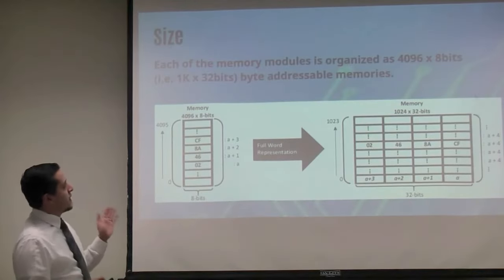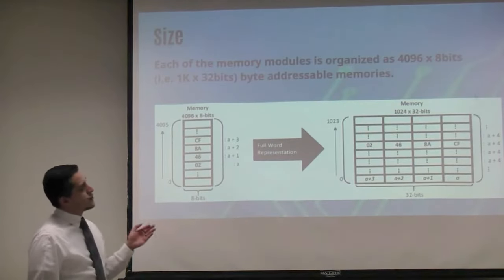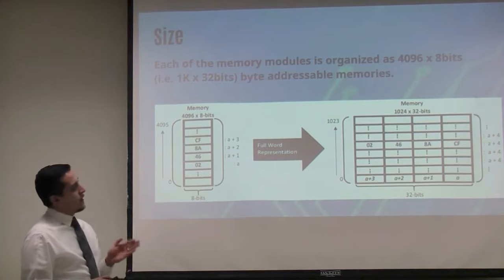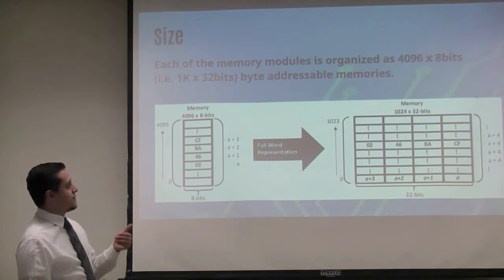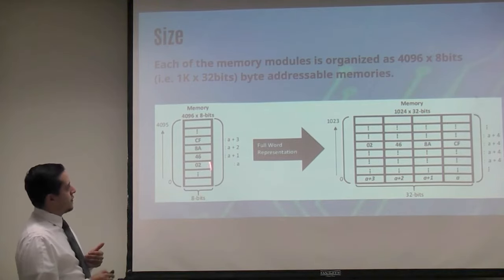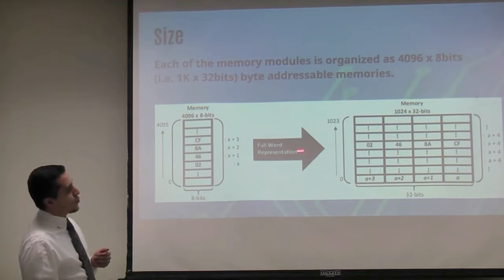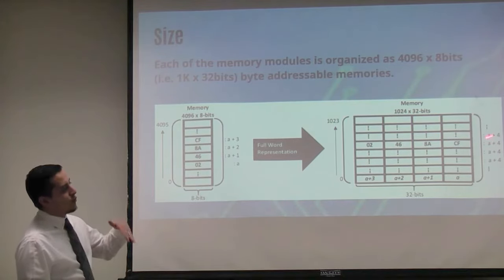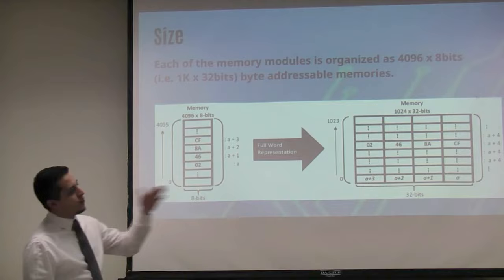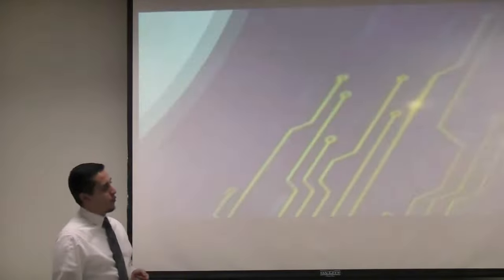Each memory is organized in a 4096 by 8 bits fashion. This is a full word representation of how it's stored in memory. You have your current address, and to move from word to word you have to add 4.